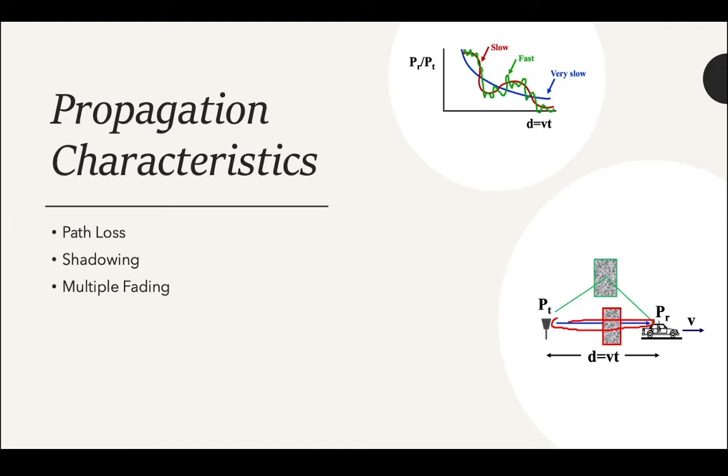The second one is shadowing. It's basically an obstruction on the path, usually by an object, and can be seen as the red box here in the image. The changes in the graph are quite slow and represented by the red line. When compared to the blue line, it fluctuates quite more often.